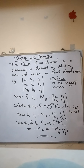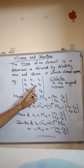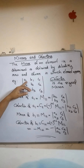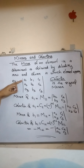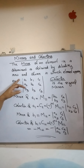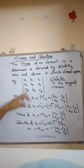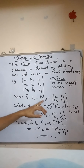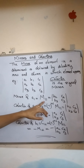Consider the determinant with elements a1, b1, c1, a2, b2, c2, a3, b3, c3. The minor of the element a1 — that is, the first row, first column element — is denoted by capital M11.